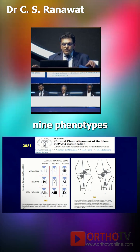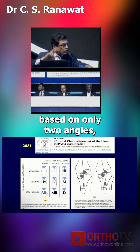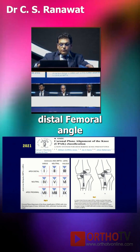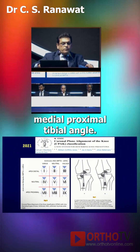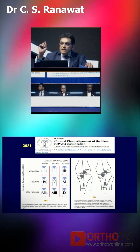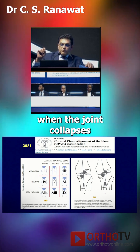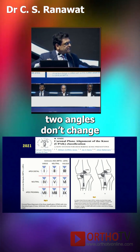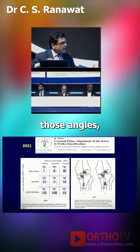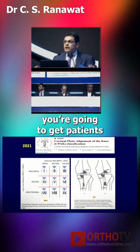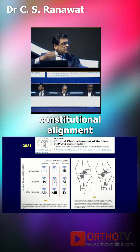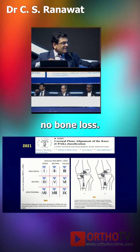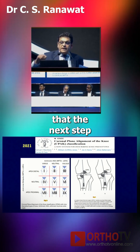If you look at the nine phenotypes that he has described based on only two angles — the lateral distal femoral angle and the medial proximal tibial angle — the concept here is that when the joint collapses on the medial side with varus, these two angles don't change. And if you recreate those angles, you're going to get the patient's original constitutional alignment back, provided there is no bone loss.